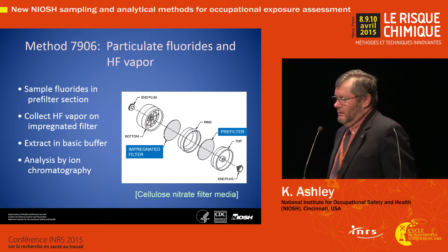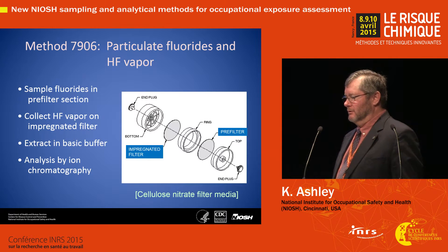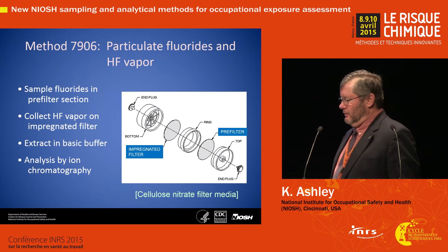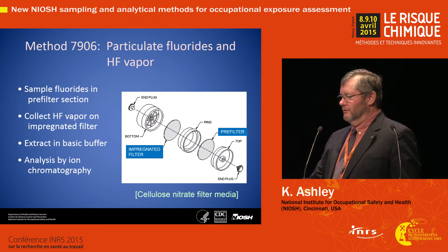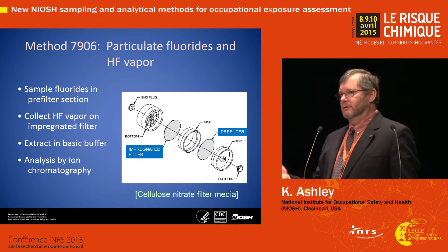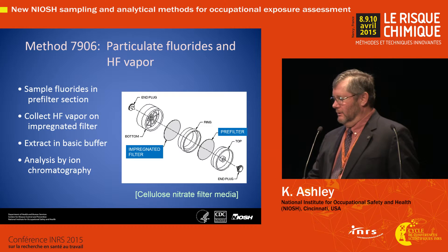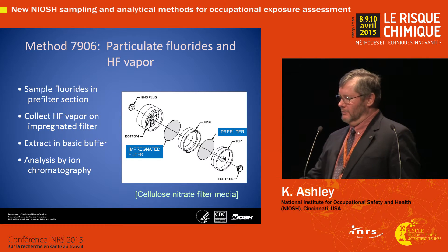Dr. Thomason discussed collection of HF. When you collect HF, you've also got to think about particulate fluorides. The sampler entails a pre-filter and then an impregnated filter. The particulate fluorides are collected on the pre-filter, which is then analyzed in total. You must include the well deposits, and this is easily done by within-cassette extraction, which has been used by INRS for many years.